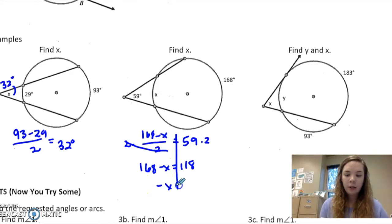So negative x equals negative 50, which makes x 50 degrees.